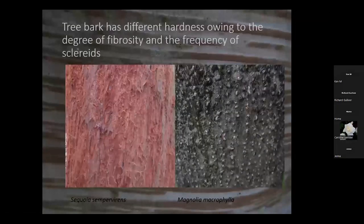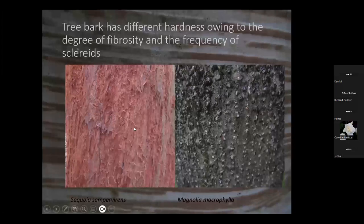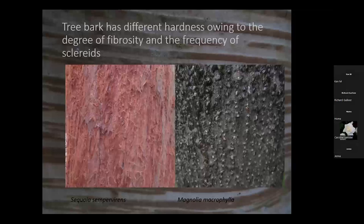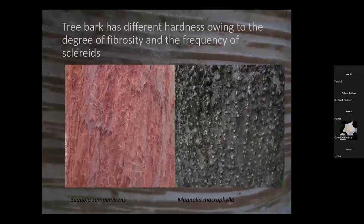Here is the Jacquemontii silver birch, showing the peeling off of sheets — as you've got new bark underneath, the outer dead cells flake away in sheets, which is how you get paper bark suitable for building canoes. The tree also differs in the content of that phellum layer — different frequency of fibres and hard cells called sclerids. Here the Californian redwood has fibrous bark that peels, whereas this big-leaved magnolia has a really tough bark, very solid — full of cork and sclerids making it much harder.